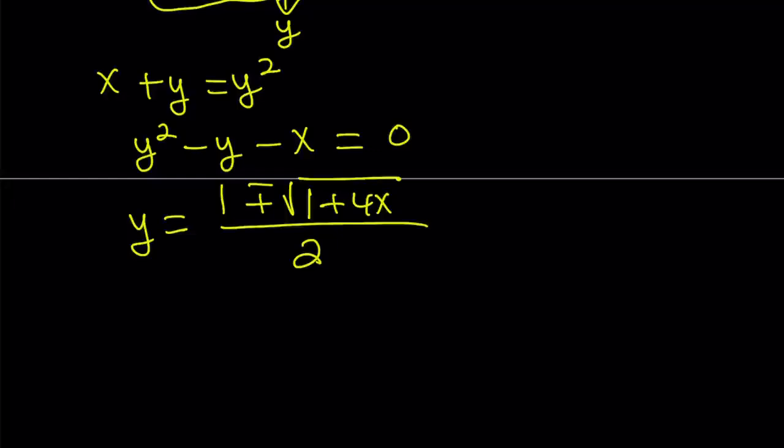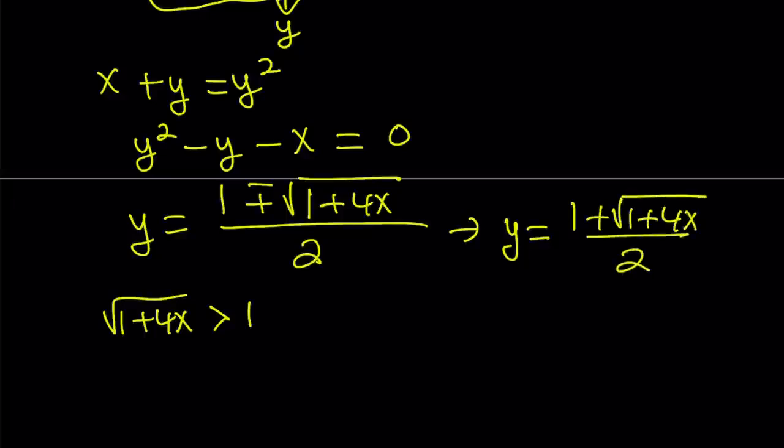We end up with two solutions here, obviously, but one thing to keep in mind is square root of 1 plus 4x, since x is positive, this is going to be greater than 1. So if you subtract 1 minus this expression, then we're going to get a negative value. In other words, we want the y value to be positive. Therefore, we're going to go with the plus sign. So this is going to be my y value.